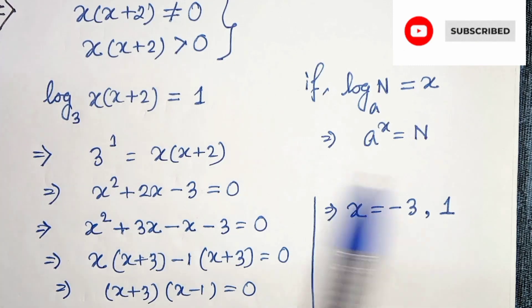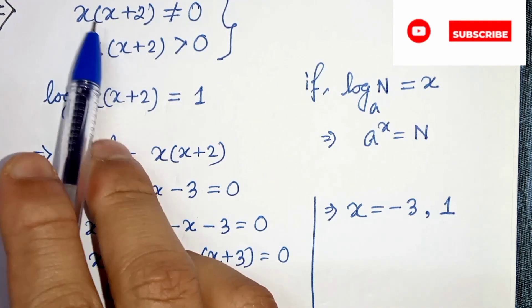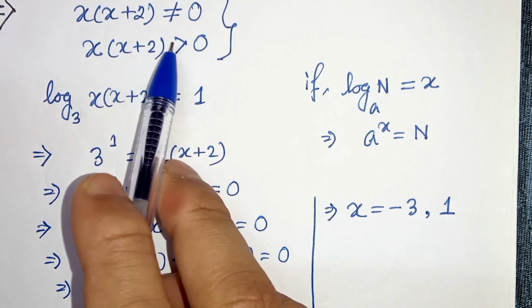Therefore, if we put 1 here, then we will get 1 times 1 plus 2, that is 3, which is greater than 0.